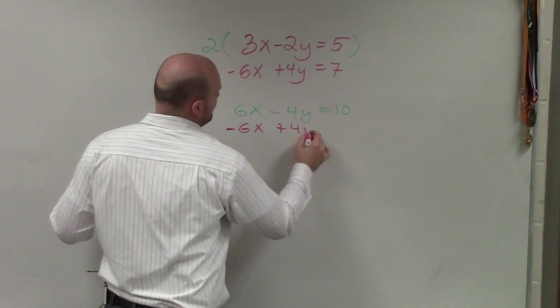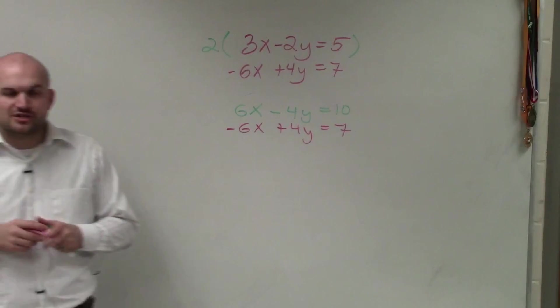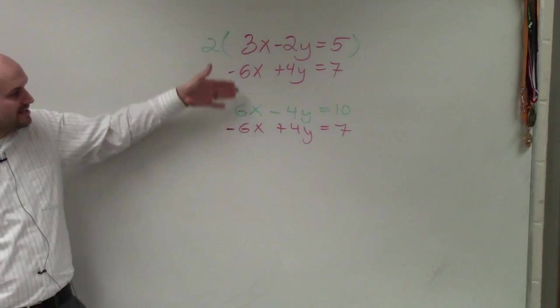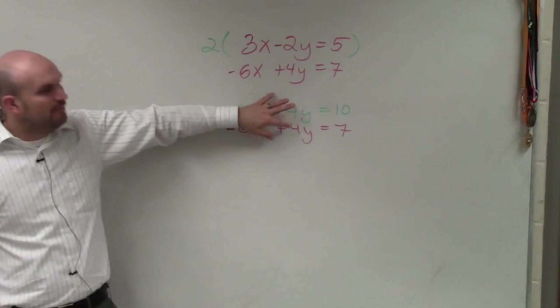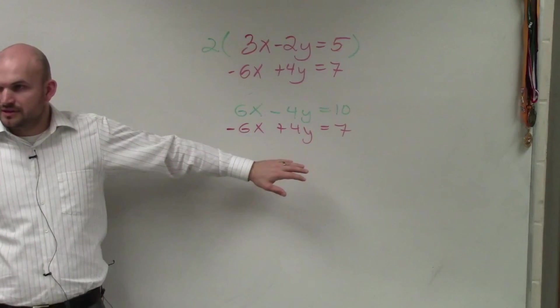Negative 6x plus 4y equals 7. Now, usually, when we're doing elimination, we're only eliminating one variable at a time. But as you guys notice, when I multiply this, now both of my variables have coefficients that are exactly the same. Do you guys see that?